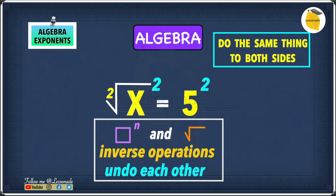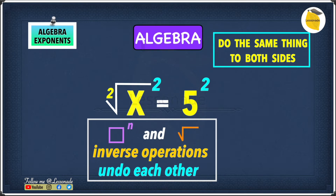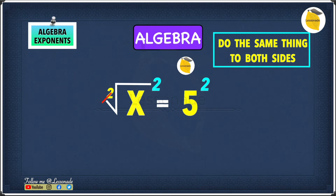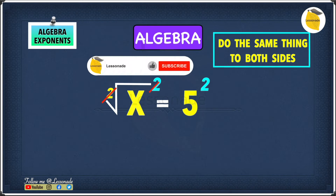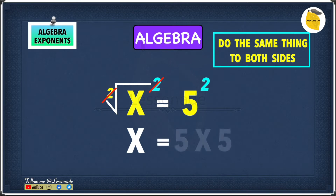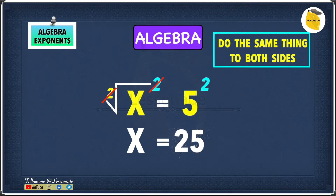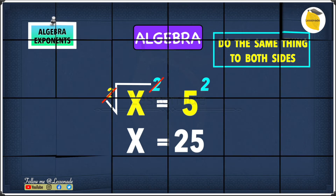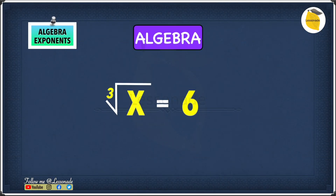The square root and the square cancel each other out because exponents and roots are inverse operations, so we're left with x. Next, we work out five squared: five squared is five times five, which is 25. So our answer is x equals 25. Now let's have a look at another example: the cube root of x equals six.